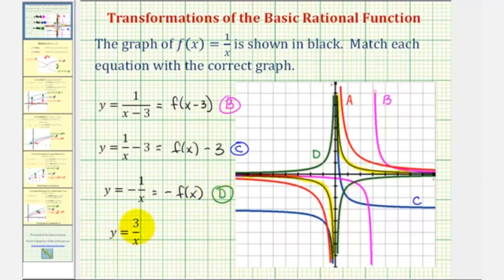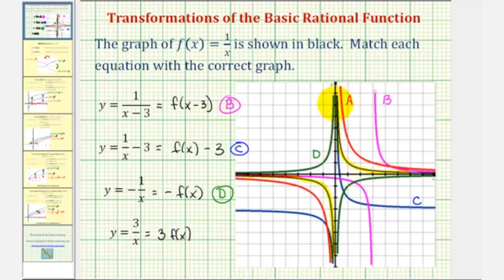Finally we have y equals three divided by x, which we can write as three times one divided by x, equivalent to three times f of x. We are multiplying the y values of f of x by three, and therefore this stretches the graph vertically. Starting with y equals one divided by x and stretching it vertically in the first and third quadrants gives us the red function — graph a.